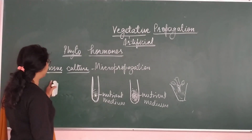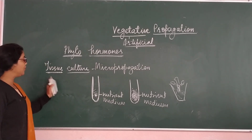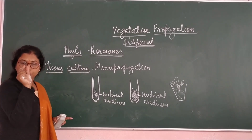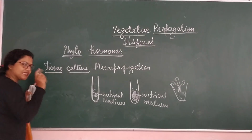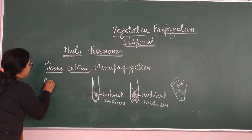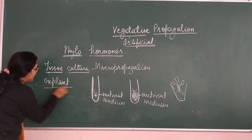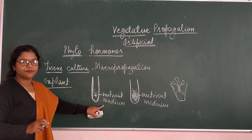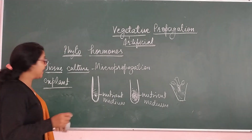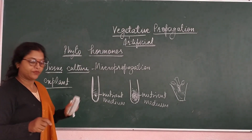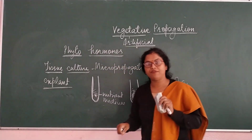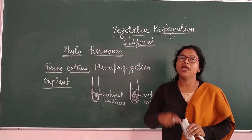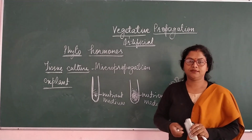I hope you have understood tissue culture. It is called tissue culture because a group of cells — a tissue — is taken and cultured. This group of cells is also called an explant, and this explant is cultured in a nutrient medium to get a new plant. That is why this process is called tissue culture. I'm sure you have understood it well. Please share, subscribe, write a comment, and wait for my new updates. Thank you.